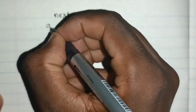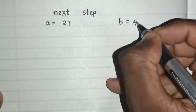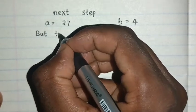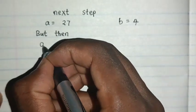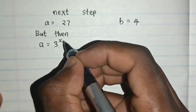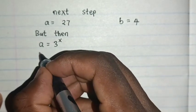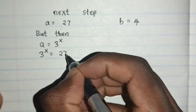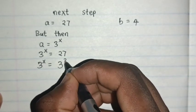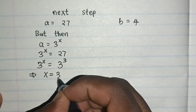Then from here, next step, a = 27 and b = 4. But then a = 3^x. So we substitute the value of a here. So 3^x = 27. 27 is 3³. So x = 3.